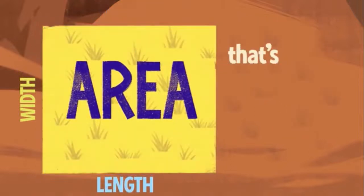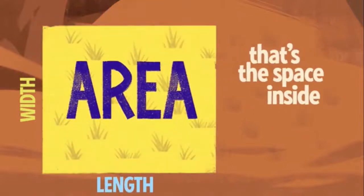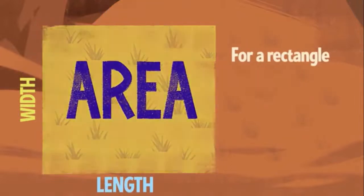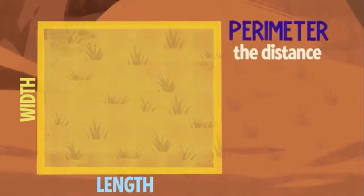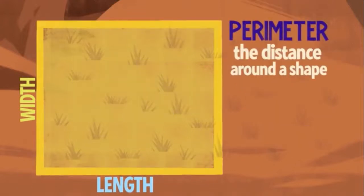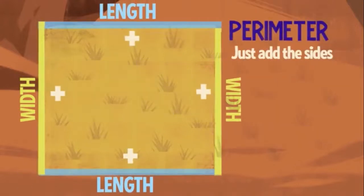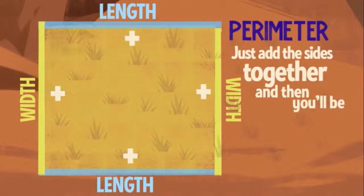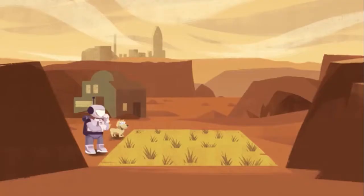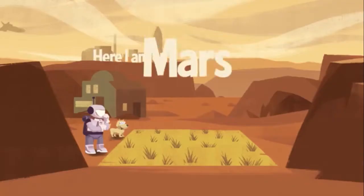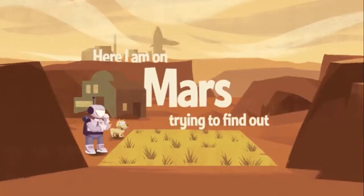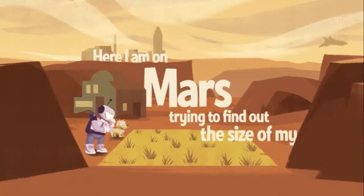Area — that's the space inside; for a rectangle it's length and width multiplied. Perimeter — the distance around a shape — just add the sides together and then you'll be great. Yeah, here I am on Mars trying to find out the size of my backyard.